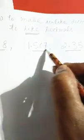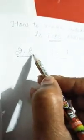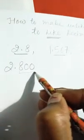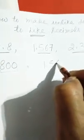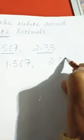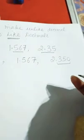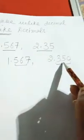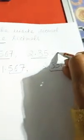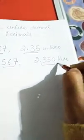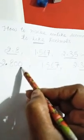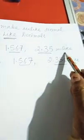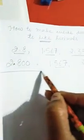Here after the decimal there are three digits, here two digits, and here one digit. By adding zeros we complete each to three digits — now three digits, three digits, three digits. These were unlike decimals; now they have become like decimals. By adding zeros we can convert unlike decimals to like decimals.